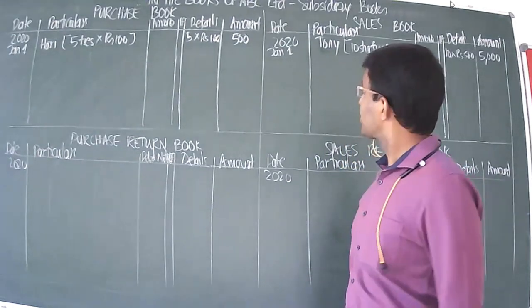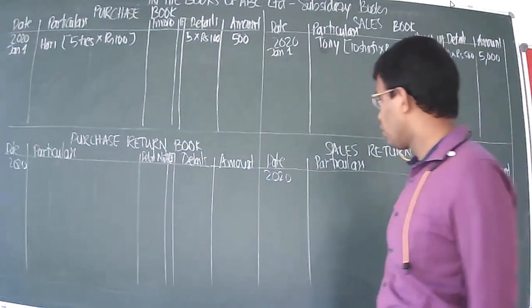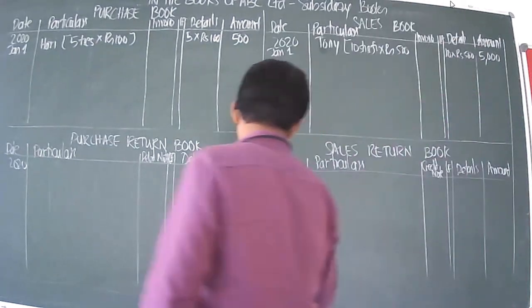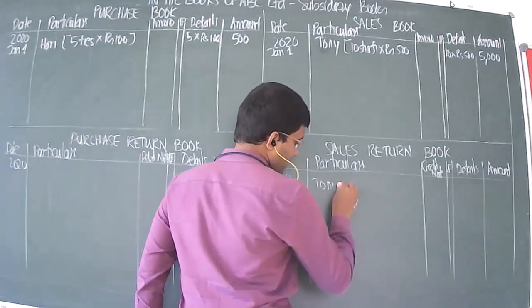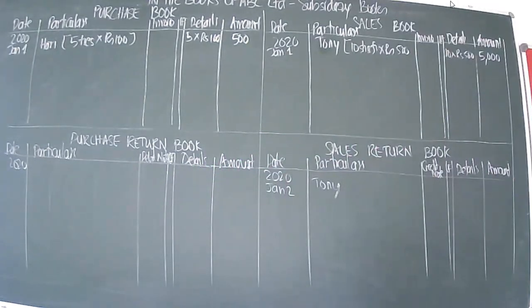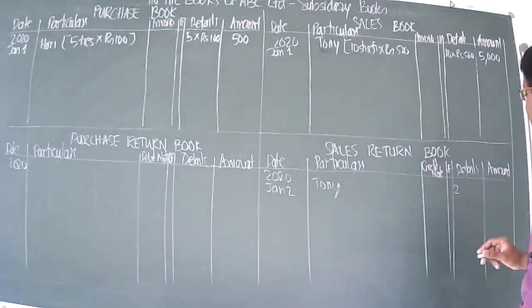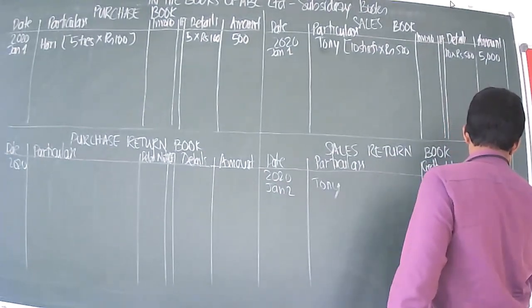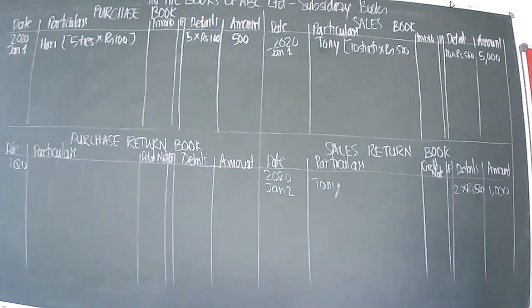Jan 2nd: Tony returned two shirts. Since we had sold shirts to Tony, this is a sales return. We write Tony's name and the details: 2 × ₹500 = ₹1,000. Next, Jan 2nd: sold 20 trousers to Asif at ₹800 each. This is a sale — we write Asif's name and details: 20 × ₹800 = ₹16,000.